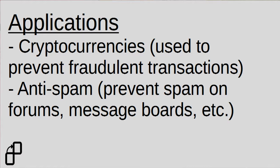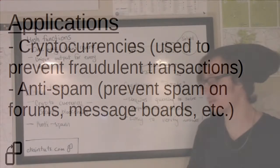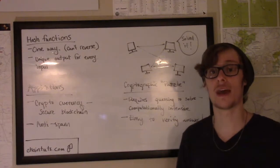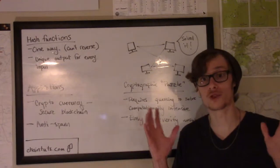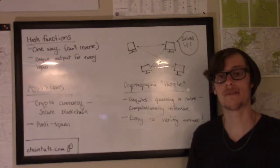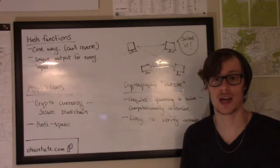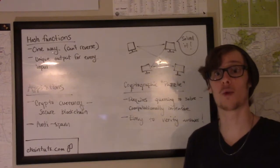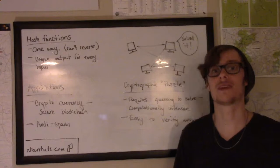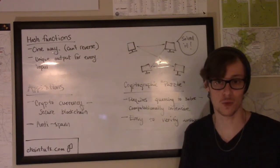With all of these nodes across the world trying to guess and find the answers to this difficult problem, it's very difficult and uneconomical for one or two malicious parties to try and fake a transaction on the blockchain, because they would have to pull together more computing power than the rest of the entire Bitcoin network across the world.